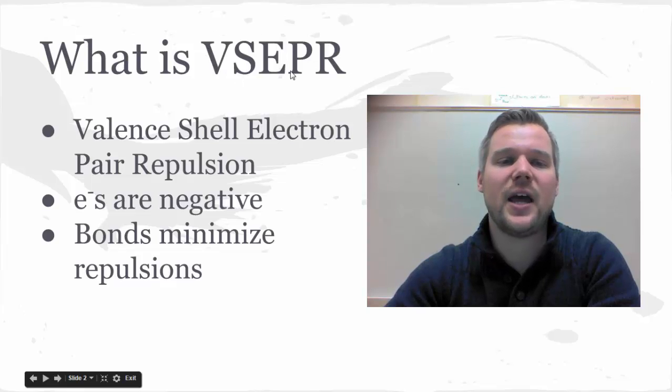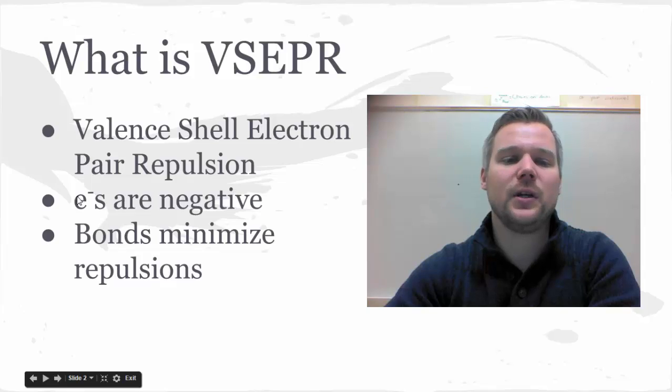So if you didn't catch this yet, this is an acronym for valence shell electron pair repulsion. Repulsion comes because electrons are negatively charged, and since negatives don't like to be next to other negatives, they repel each other. We're only talking about the valence shell electrons, and that's why we're going to be using Lewis structures to talk about this.